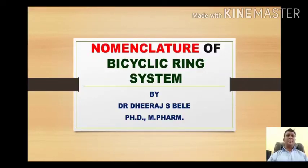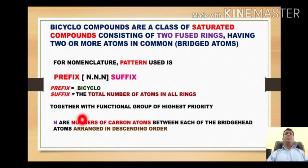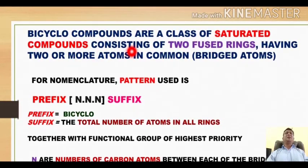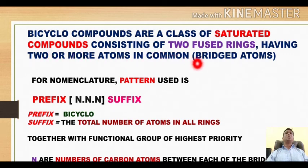Today's topic is the nomenclature of bicyclic ring systems. Bicyclo compounds are a class of saturated compounds which consist of two fused rings having two or more atoms in common. The two atoms which are common to the rings are referred to as the bridged atoms, which is why such compounds are also called bridged compounds.